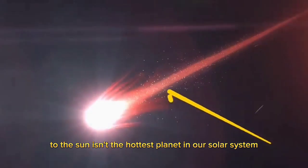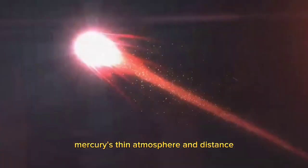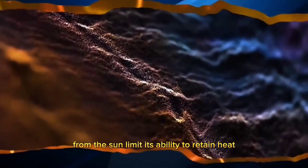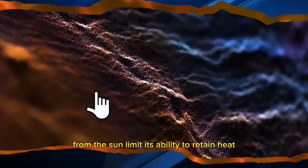In summary, there are several reasons why the planet closest to the Sun isn't the hottest planet in our solar system. Mercury's thin atmosphere and distance from the Sun limit its ability to retain heat.